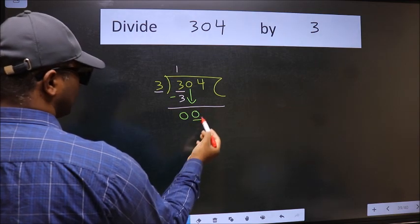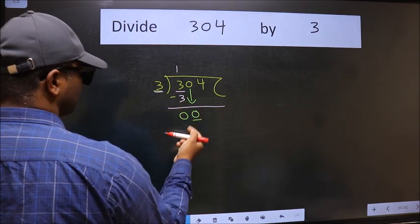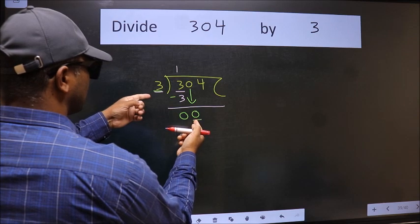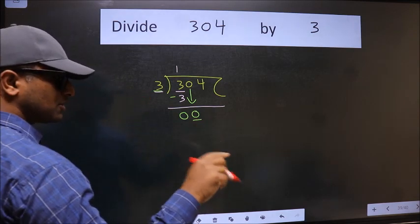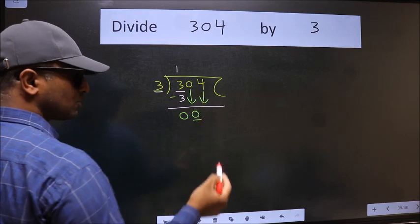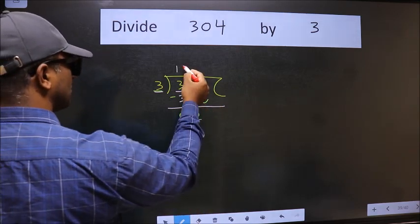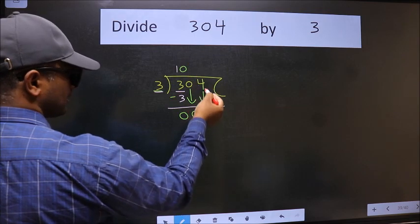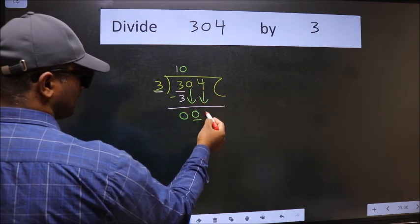Now here we have 0 and here 3. 0 is smaller than 3. So we should bring down the second number. And the rule to bring down second number is we should put 0 here. Then only we can bring this number down.